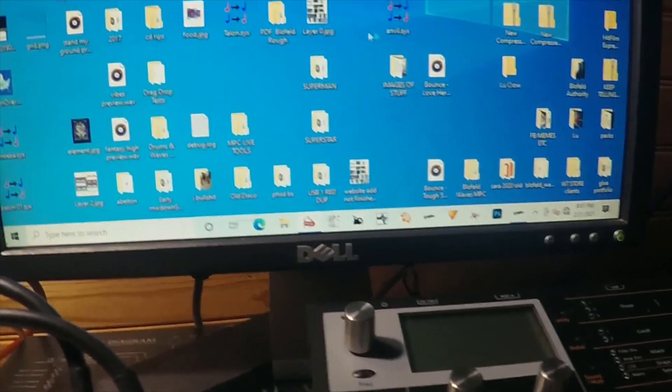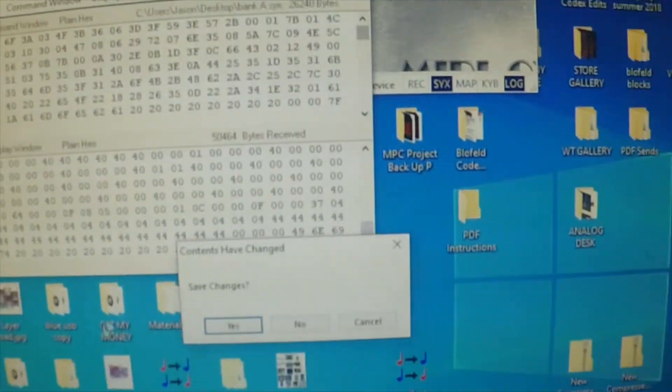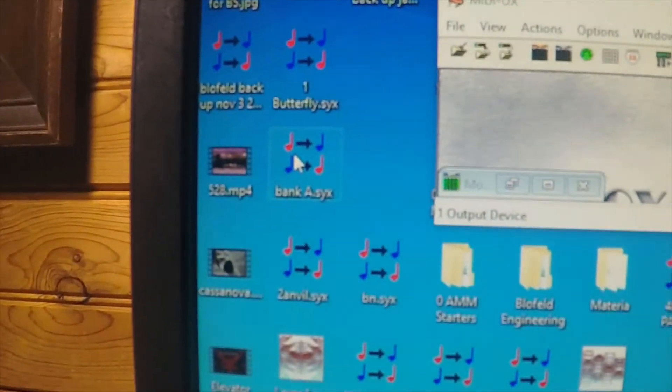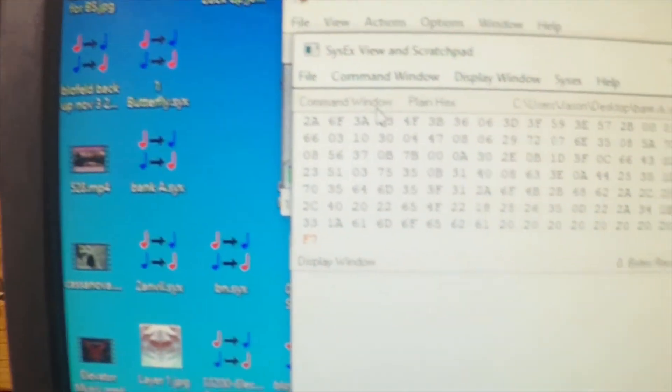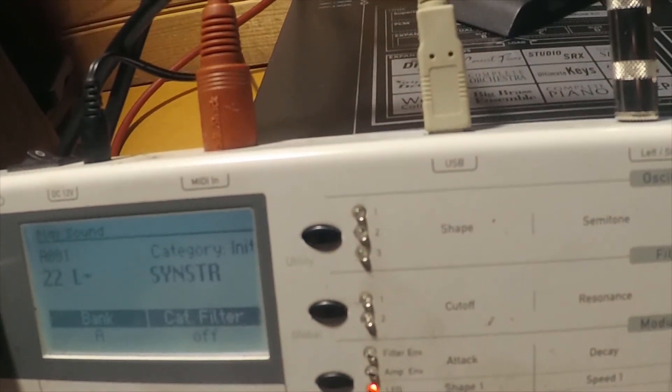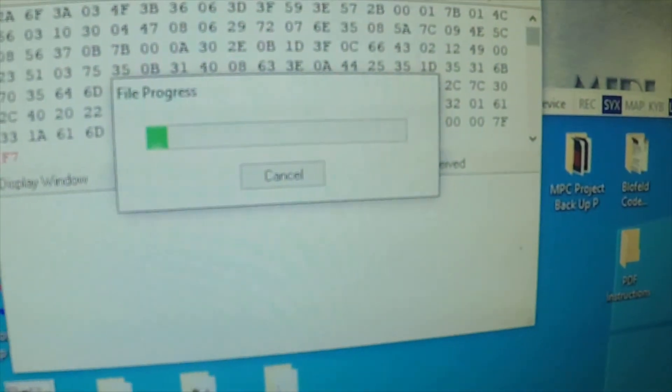Okay, save it. Now Bank A appears here. When you want to recall it, you take that Bank A and drag it back into MIDI OX. Your Blofeld is hooked up, and then you go to Command Window and Send SysX. It will load those patches back in.